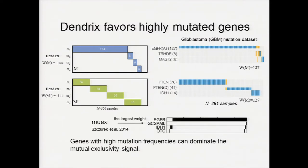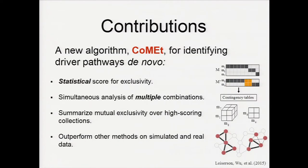MIMO-X is an approach published last year that recognized this problem and tried to solve it, but ended up with the same problem. This motivates us to come up with a better scoring function. So we propose a new algorithm called COMET for identifying driver mutations based on this contribution.